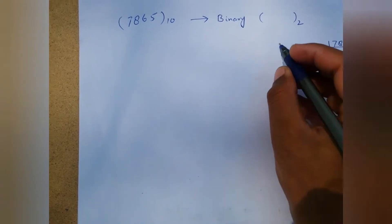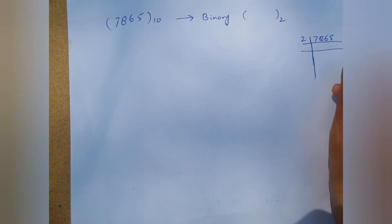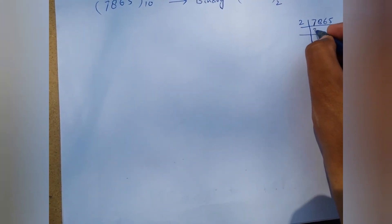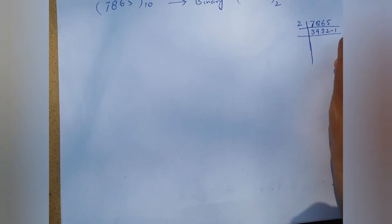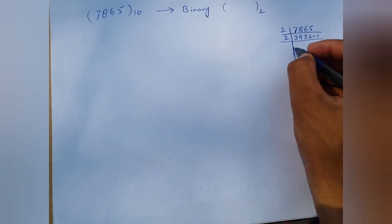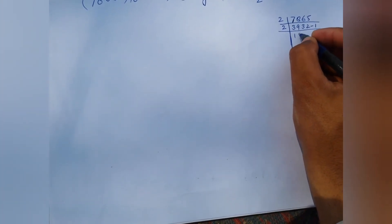The simple process is to divide our decimal number by two until we obtain a digit which is less than two. We start division: first we divide 7865 by two and we obtain 3932, and the remainder is one. We write our remainder on the right side of our answer. Then we divide 3932 by two and we obtain 1966.